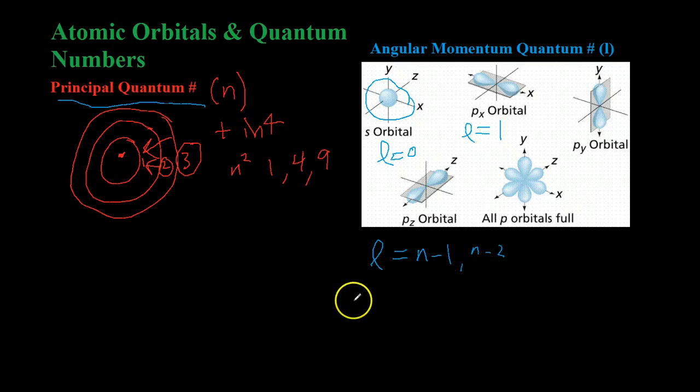The way you write these in sort of standard orbital notation would be, instead of writing n equals one, l equals one. What you would do is you would write n, so you'd write one, and then the orbital shape. So, one S or two P or two S, whatever you wanted to do.